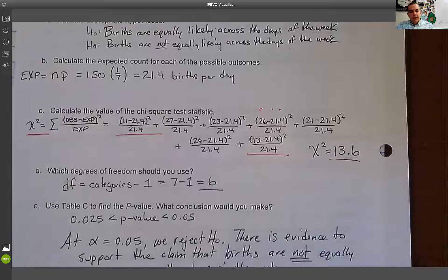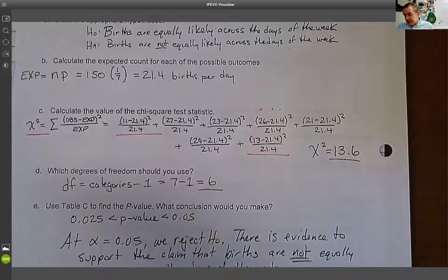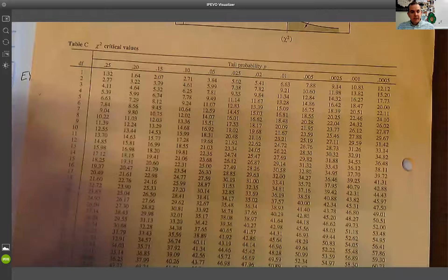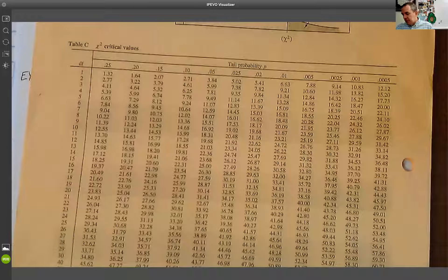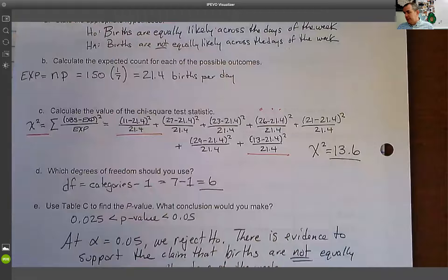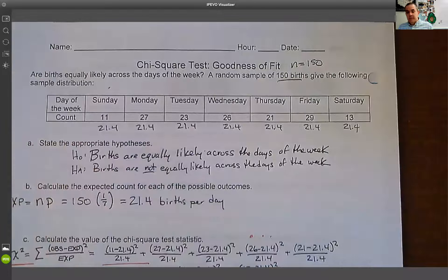So that is our chi-squared goodness of fit test. It is a test that we typically will do on a one sample, on one-way table. Again, one-way table is this. That's a one-way table. It's got just one row of data.